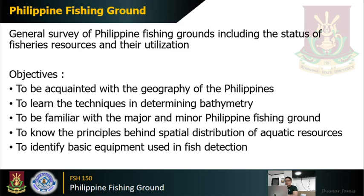The objective of our course is, first, to be acquainted with the geography of the Philippines. Second is to learn the techniques in determining bathymetry. Third is to be familiar with the major and minor fishing grounds of the Philippines. Fourth is to know the principles behind spatial distribution of aquatic resources. And lastly, to identify basic equipment used in fish detection. These are the five general objectives of the Philippine fishing ground course.